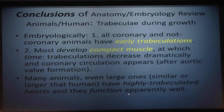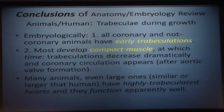Conclusion: Embryologically, early trabeculations are present in every human embryo and all animal embryos. Then compact muscle in humans becomes the norm. Highly trabeculated hearts may or may not function normally in different animal species.